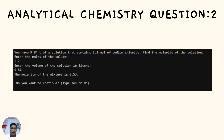Next question: You have 9.84 liters of a solution that contains 5.2 mol of sodium chloride. Find the molarity of the solution. Enter the moles of solute, which is 5.2. Enter the volume of the solution in liters, which is 9.84. The molarity of the mixture is 0.53.